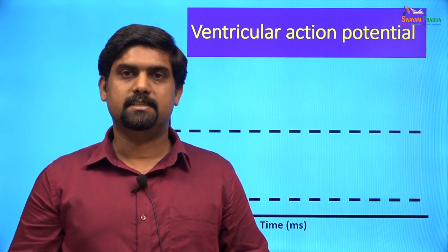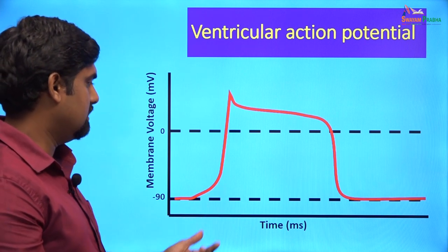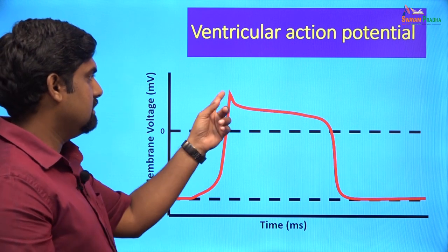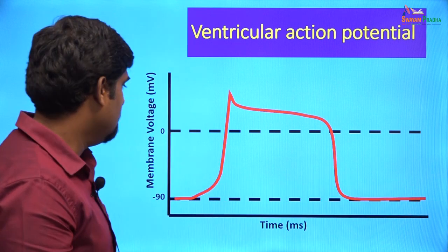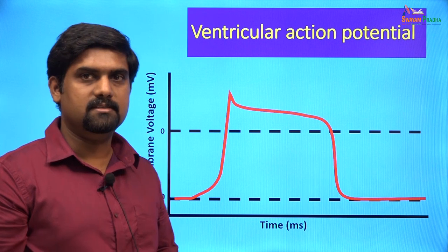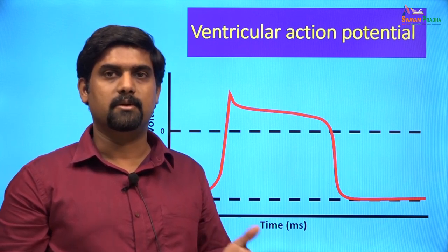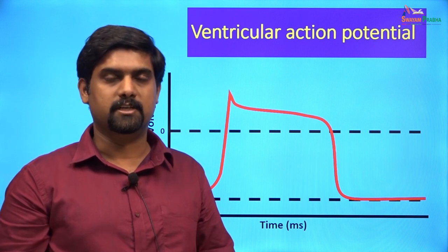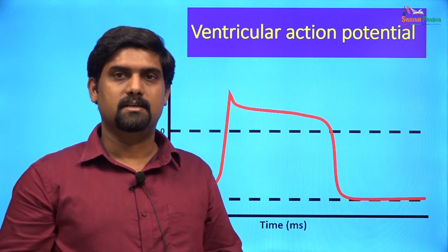From the Purkinje fibers, the action potential reaches the ventricular myocytes, which produce a ventricular action potential. Phase 4 is the resting membrane potential at minus 90 millivolts, followed by a rapid depolarization phase, an early repolarization phase, a plateau phase, a delayed repolarization phase, and finally a return to the resting membrane potential (phase 4). The duration of the ventricular action potential is much greater than the atrial action potential duration, because of differences in the delayed rectifier potassium channels. Ventricular cells have slow delayed rectifier potassium channels compared to atrial cells, which have faster delayed rectifier potassium channels. The slower channels open and close slowly, causing prolongation of the repolarization phase.